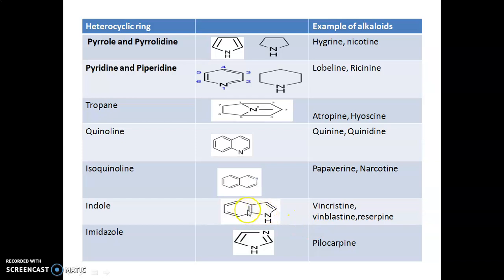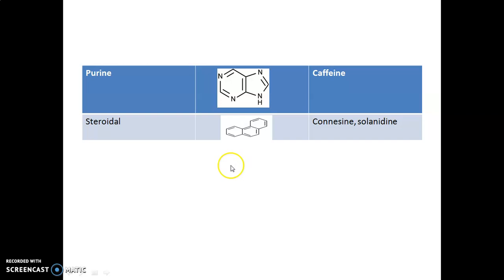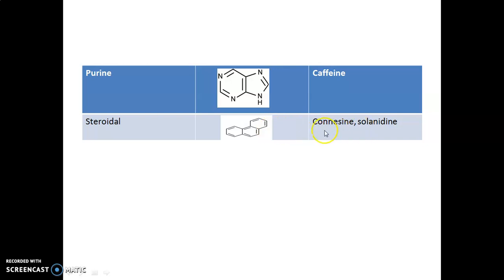Indole alkaloids include vincristine, vinblastine, and reserpine. Imidazole alkaloids — examples include pilocarpine. Purine alkaloids are a special class; examples include caffeine. Steroidal alkaloids include conessine or solanidine. Protoalkaloids or amino alkaloids include colchicine and ephedrine.